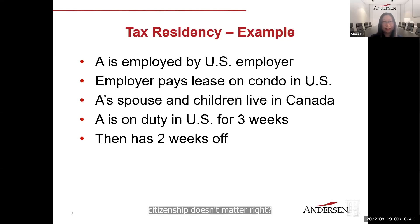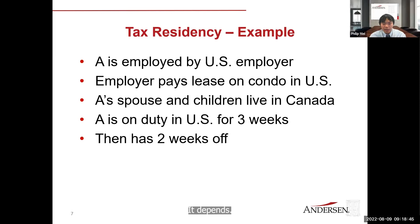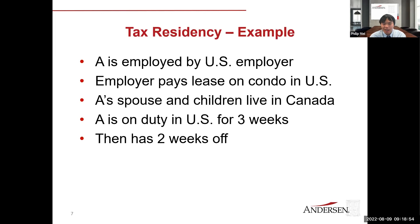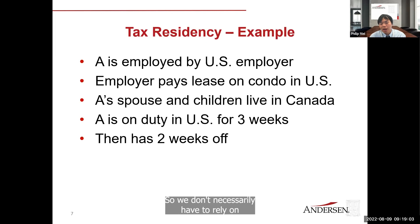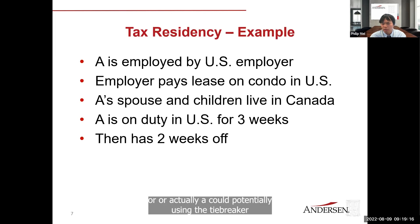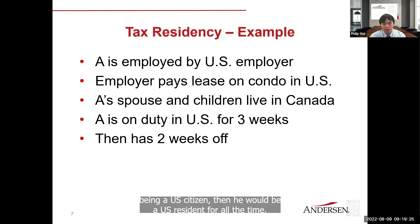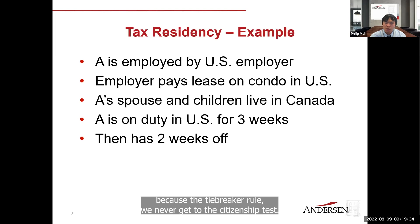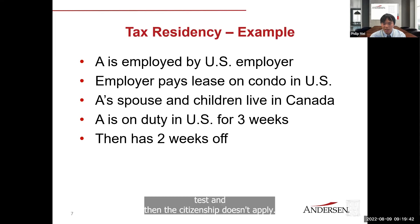Regarding citizenship: if A happened to be a U.S. citizen, the tiebreaker discussion would be less relevant — a U.S. citizen is automatically treated as a U.S. resident regardless. If A is only a Canadian citizen, the tiebreaker rule never reached the citizenship test because a determinative answer was already found at the habitual abode stage. In the Canadian citizen scenario, A could potentially use the tiebreaker rule to depart Canada, as the habitual abode test pointed to U.S. residency.